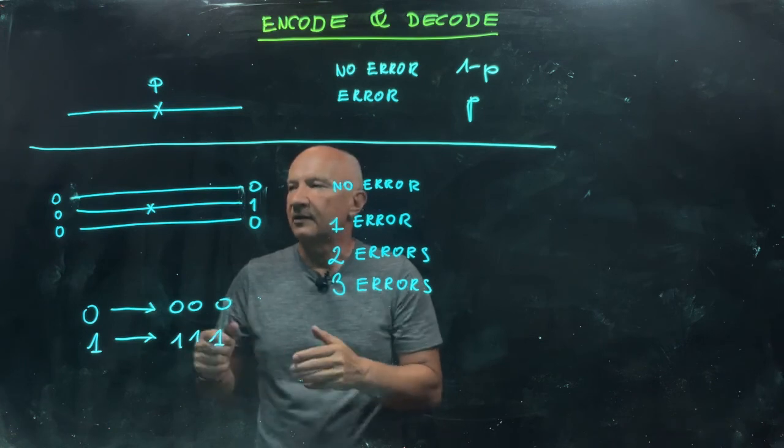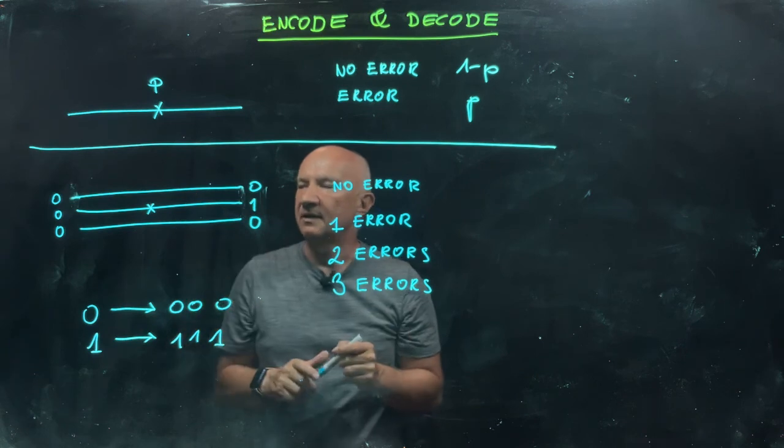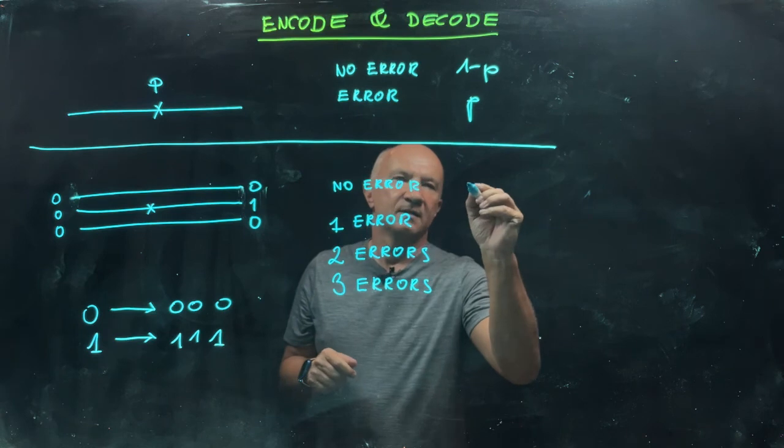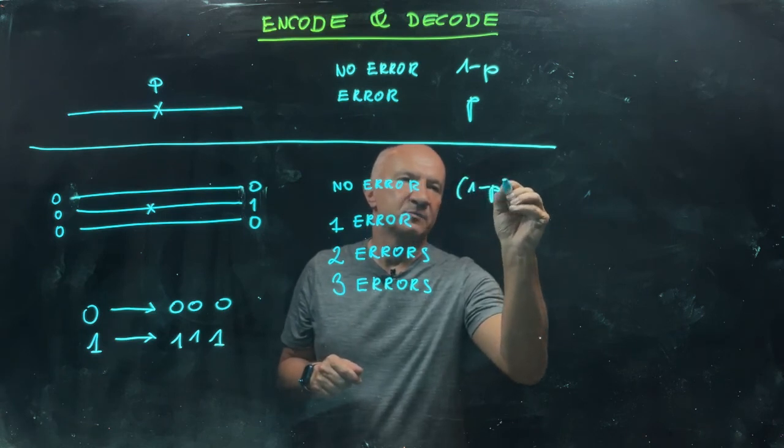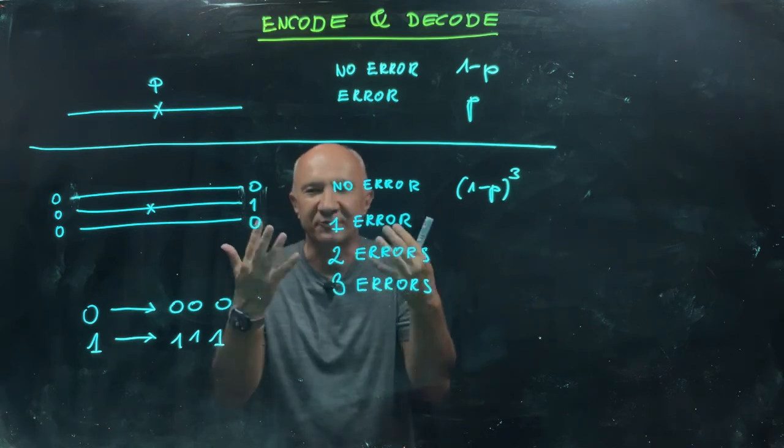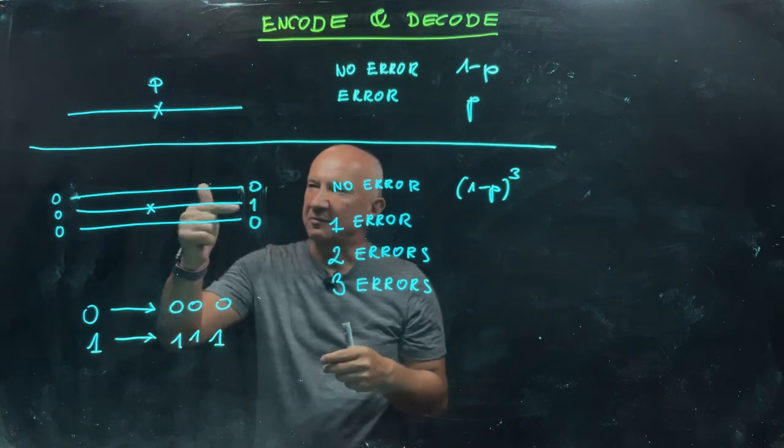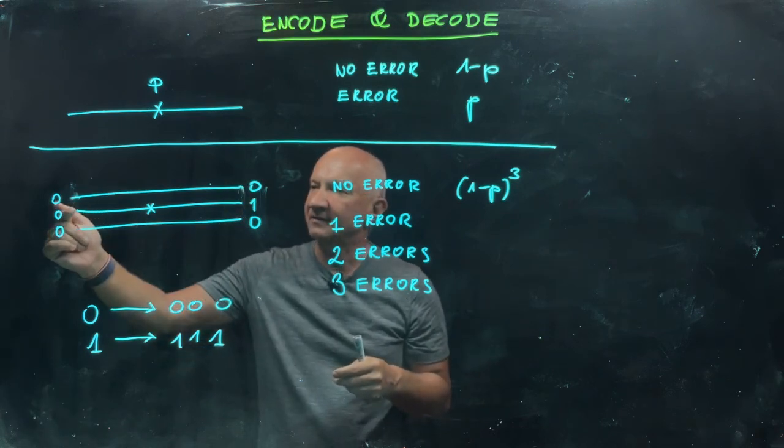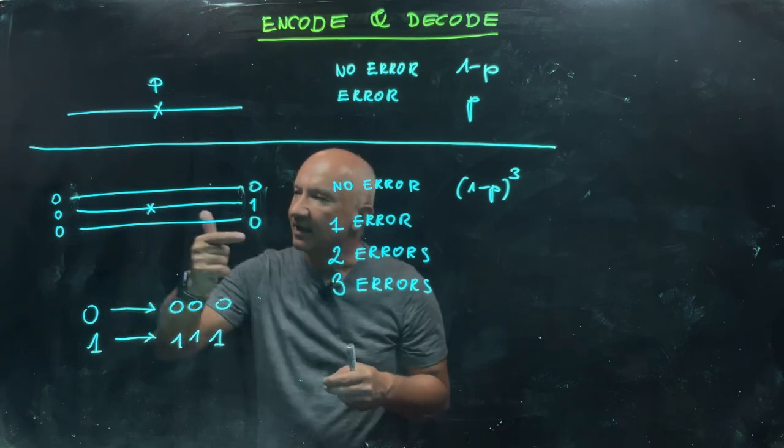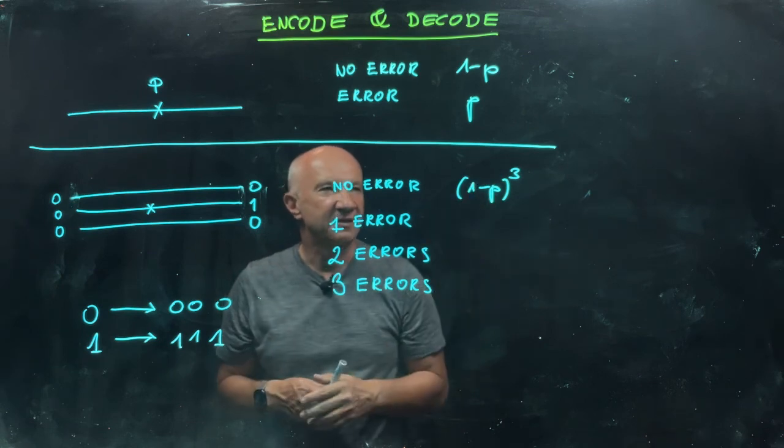Now we're doing the repetition code. The probability that nothing happens during the transmission of those three bits is (1-p)³. Those are independent errors, so each bit goes with probability 1-p unaffected, and the product gives us (1-p)³.